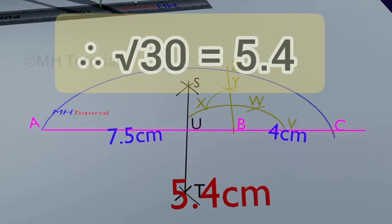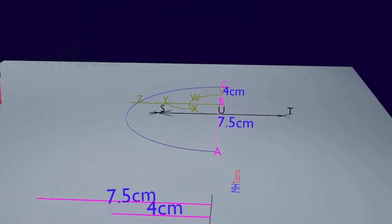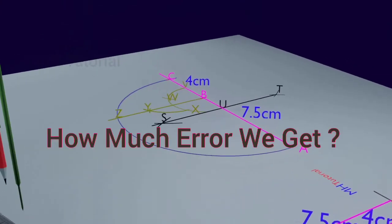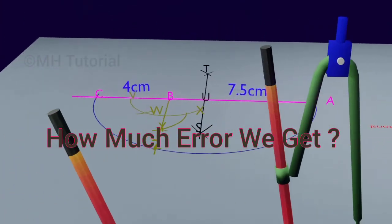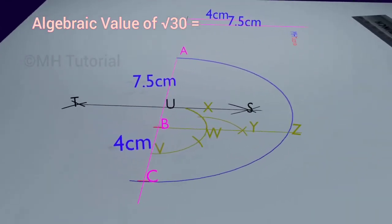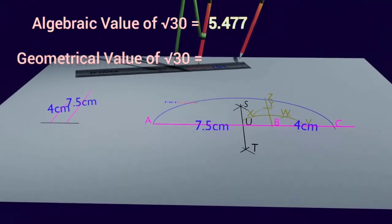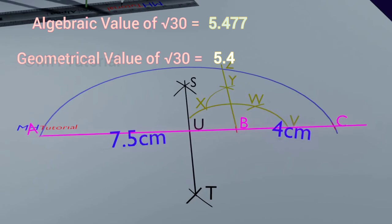It is possible to reduce the amount of error by using quality geometrical instruments and practicing it repeatedly. Now it is time to calculate the error. Using simple algebra we get the value of square root of 30 as approximately 5.477, and here using the geometric method we find it to be 5.4.